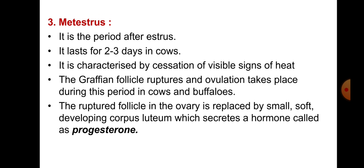Third is metestrus - the period after oestrus. It lasts for two to three days in cows. It is characterized by cessation of visible signs of heat. The Graafian follicle ruptures and ovulation takes place during this period in cows and buffalo. Ovulation means the formation of the ovum. The ruptured follicle in the ovary is then replaced by a small, soft, developing corpus luteum, which secretes the hormone called progesterone.